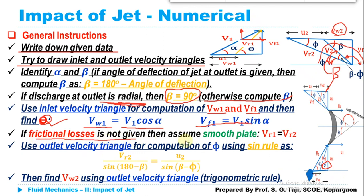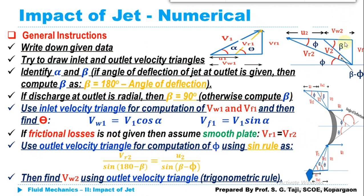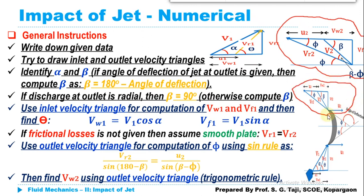If frictional losses are not given, assume the plate is smooth and take Vr1 = Vr2. Use the outlet velocity triangle for computation of phi. For computing phi we are going to make use of the sine rule: the length of a side divided by the sine of its opposite angle.